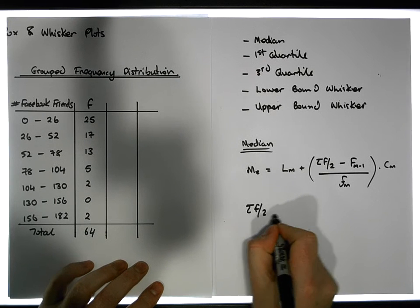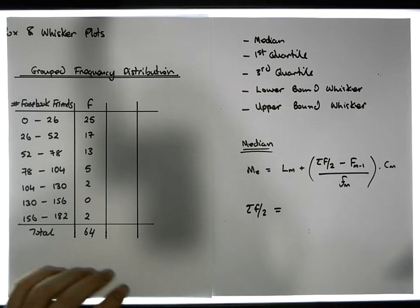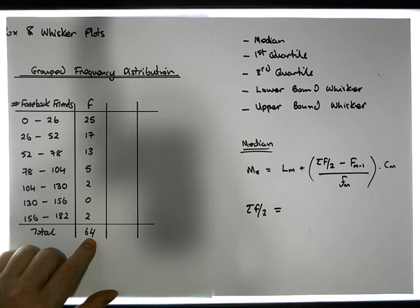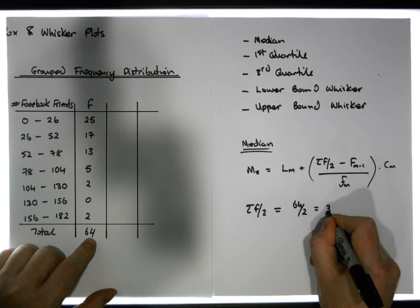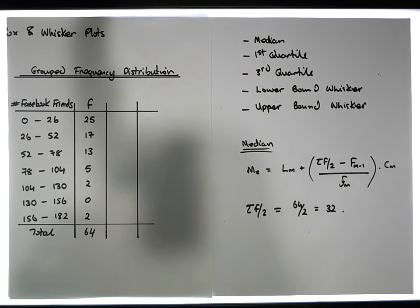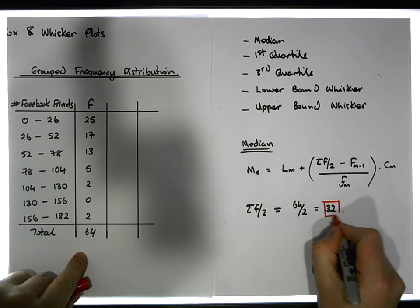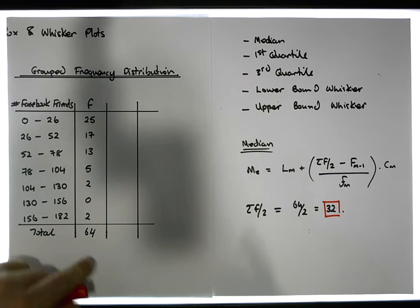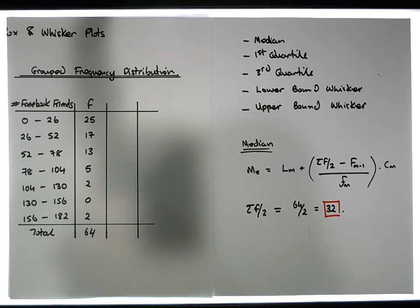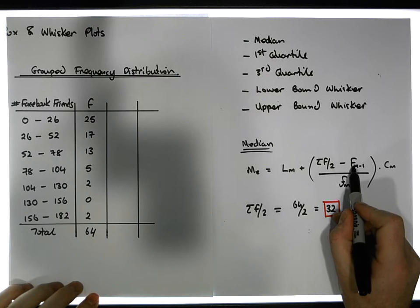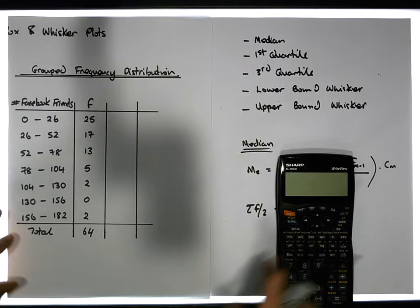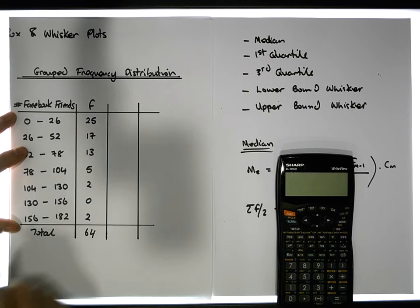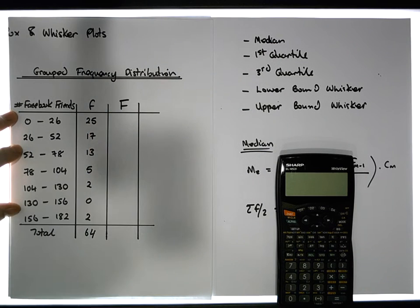In our case, σf is 64, so σf/2 equals 32. This is the key value that allows us to identify all the relevant numbers for our median calculation. To proceed, we need to construct a cumulative frequency column — a capital F column — for our group frequency table.